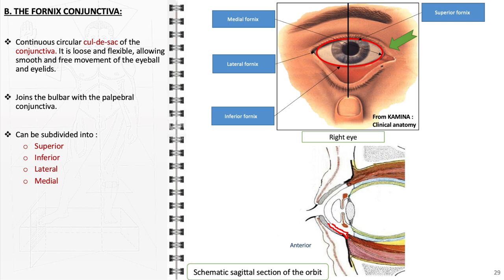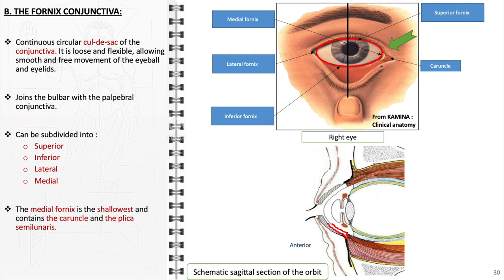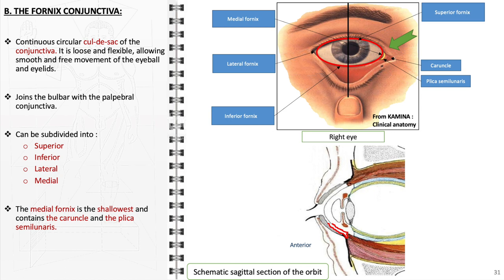Among these, the medial fornix is notably the shallowest and is the site of the cauncle, a small, pink, globular nodule at the inner corner of the eye that contains sebaceous and sweat glands, and the plica semilunaris, a crescent-shaped fold of conjunctiva that allows for lateral eye movement. The accessibility of the fornix conjunctiva makes it an important site for the administration of ocular medications.